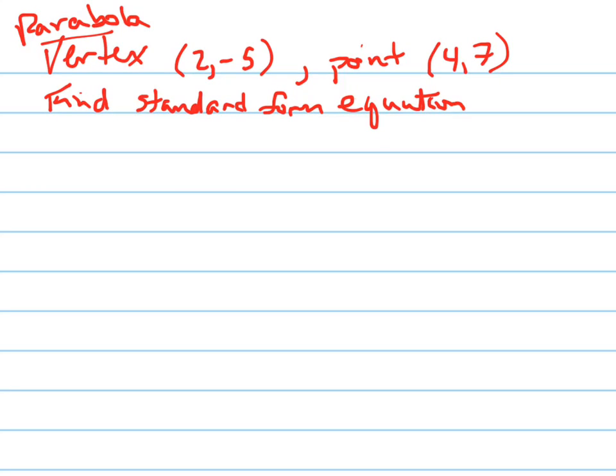Alright, here's a word problem. They want us to find the parabola whose vertex is 2, negative 5, containing the point 4, 7, and they want us to write it in standard form.